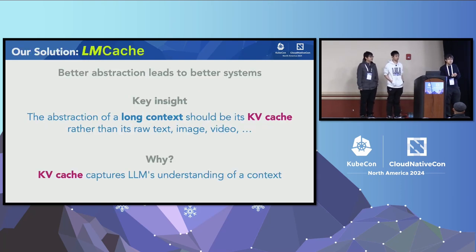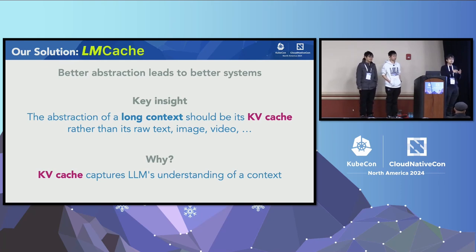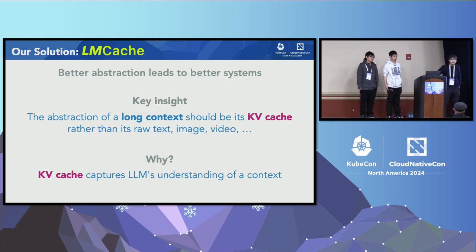The key insight is you need a better abstraction for long-context data. Traditionally, long-context data is used as part of the input — so-called in-context learning — where the context is viewed as input tokens. That's why the model needs a lot of time to process it — it's very slow. On the other hand, fine-tuning embeds new knowledge in the model's weights, but fine-tuning takes hours to tens of hours or even several days. Our insight is that the abstraction for long-context data should not be tokens or model weights — it should be the KV cache.